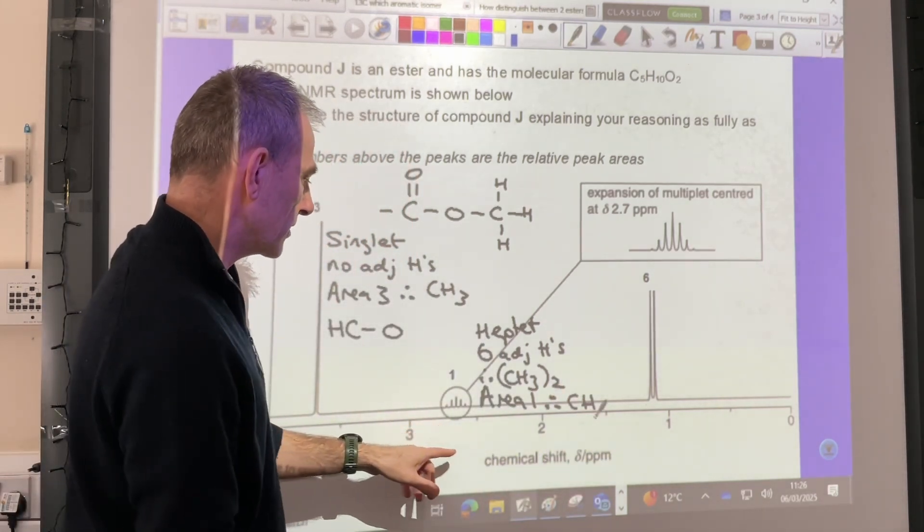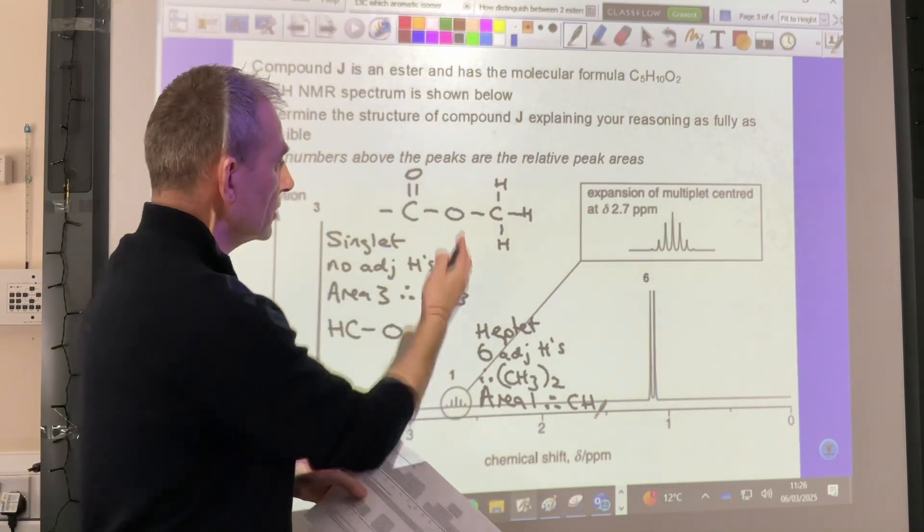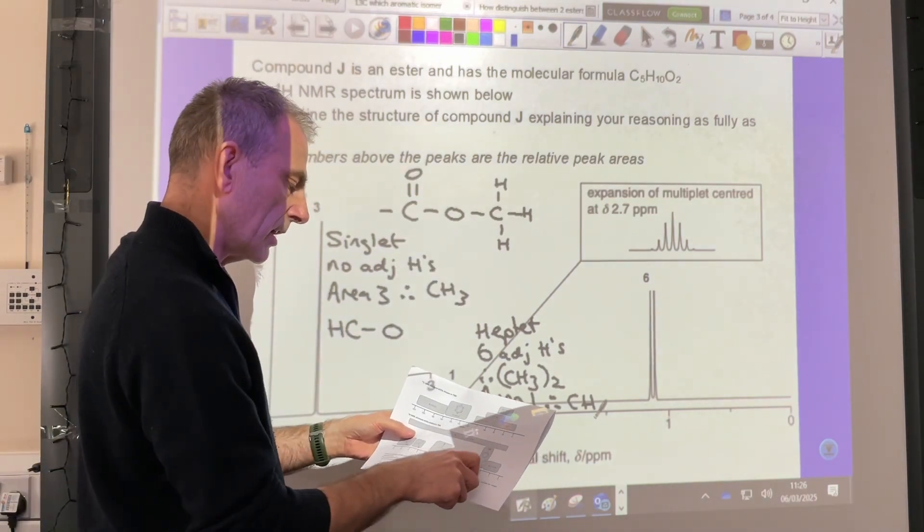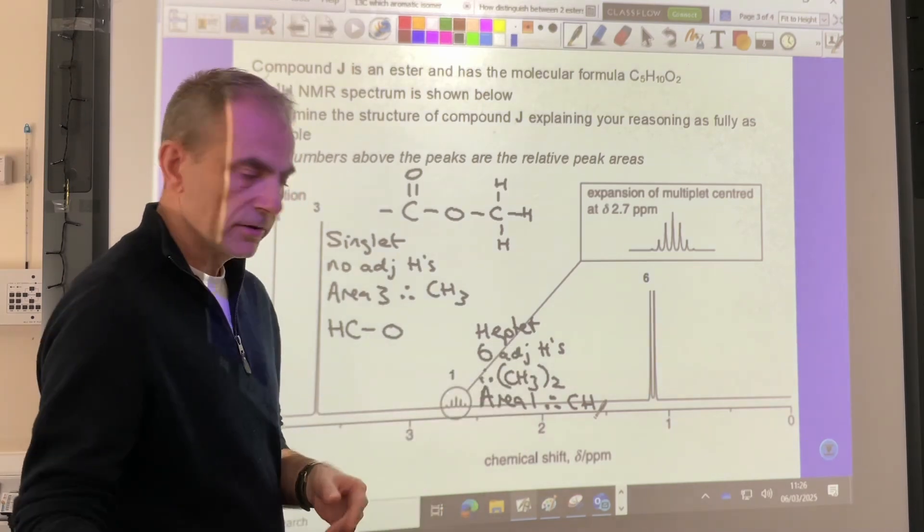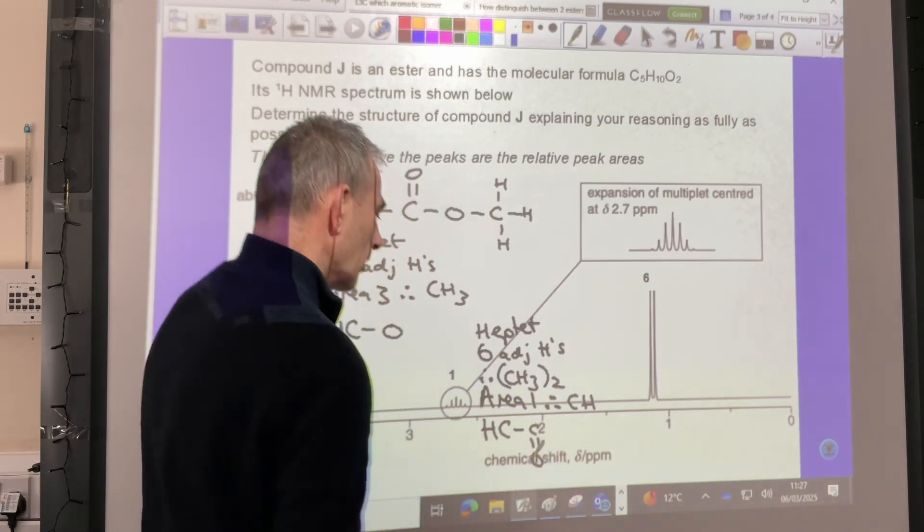And what's the environment here? So it's between 2 and 3, so you go to your datasheet, you know it's an ester. It's H to C to C double bond O. So H, C, C double bond O.